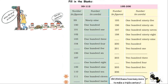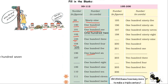Fill in the blanks. Number in figures is 99, number in words is 99. Then 100, 100. Then 101, 101. Then 102 — what can be written here? The answer will be 102. Again, 103, 104 — what can be written here? The answer will be 105. Again, 106 — what can be written here? 107. And what can be written here? 108 in numbers.